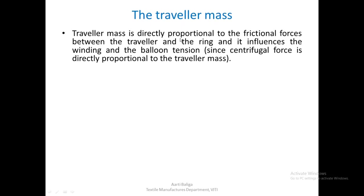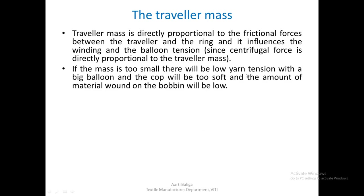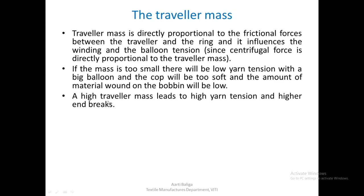The traveler mass is directly proportional to frictional forces between the traveler and the ring, since centrifugal force is directly proportional to traveler mass, and it influences winding as well as balloon tension. If the mass is too small, there will be low yarn tension with a big balloon, the cop will be too soft, and the amount of material wound on the bobbin will be very low. On the other hand, higher traveler mass leads to high yarn tensions and higher end breakages.